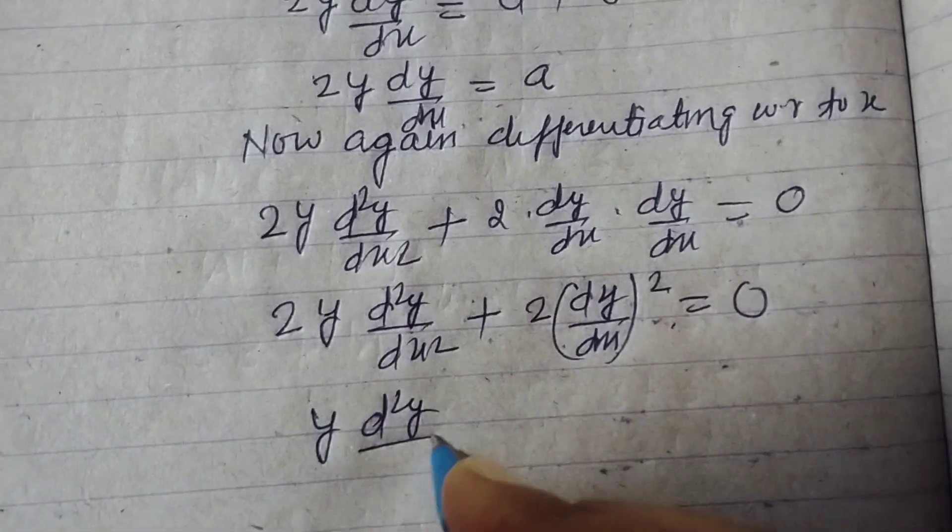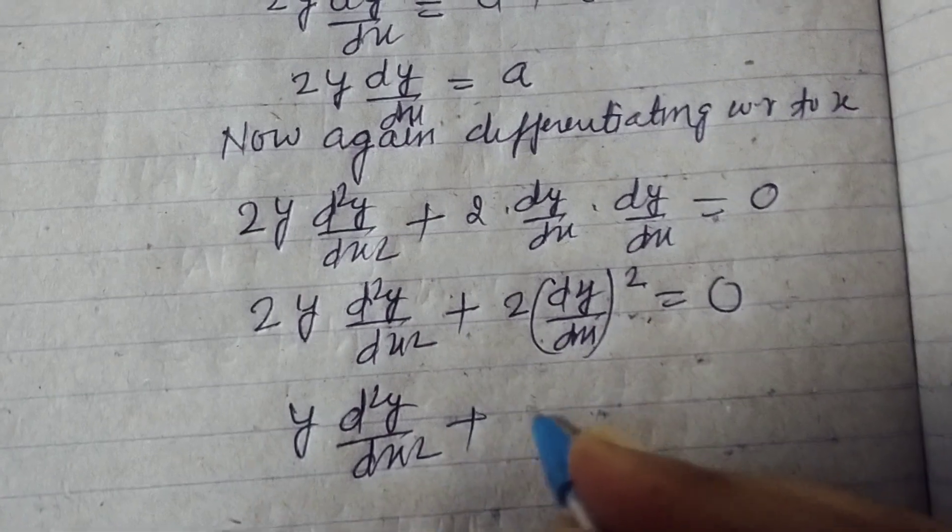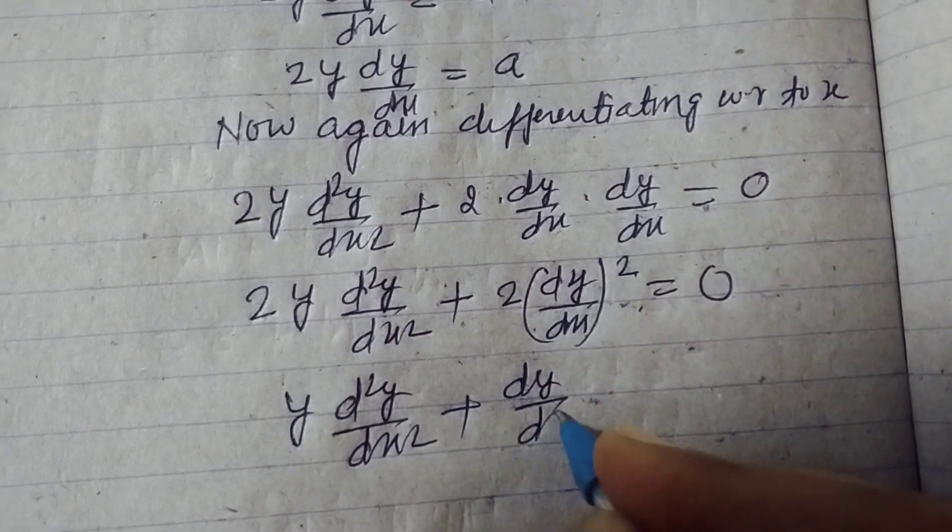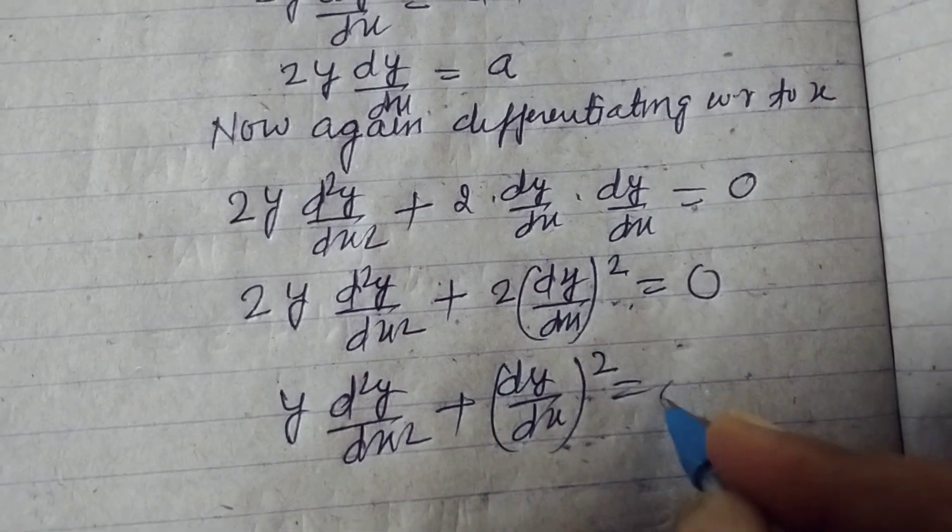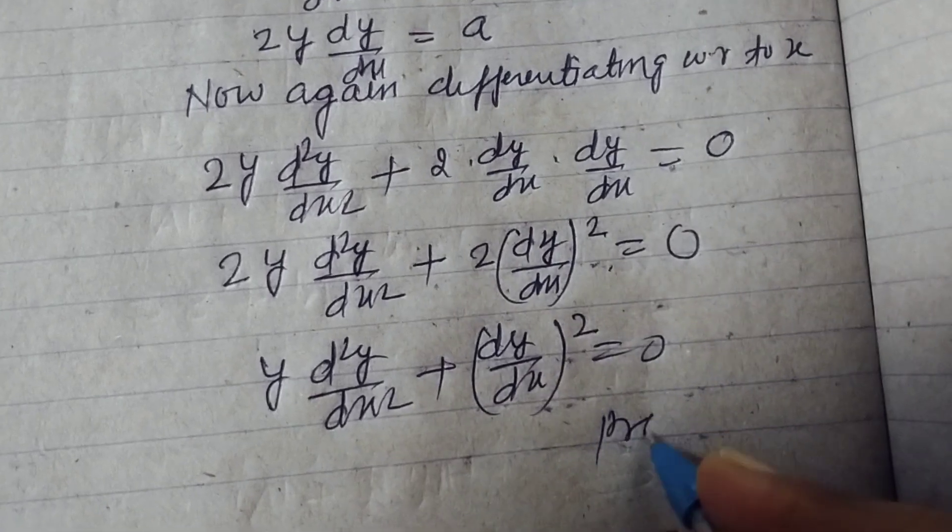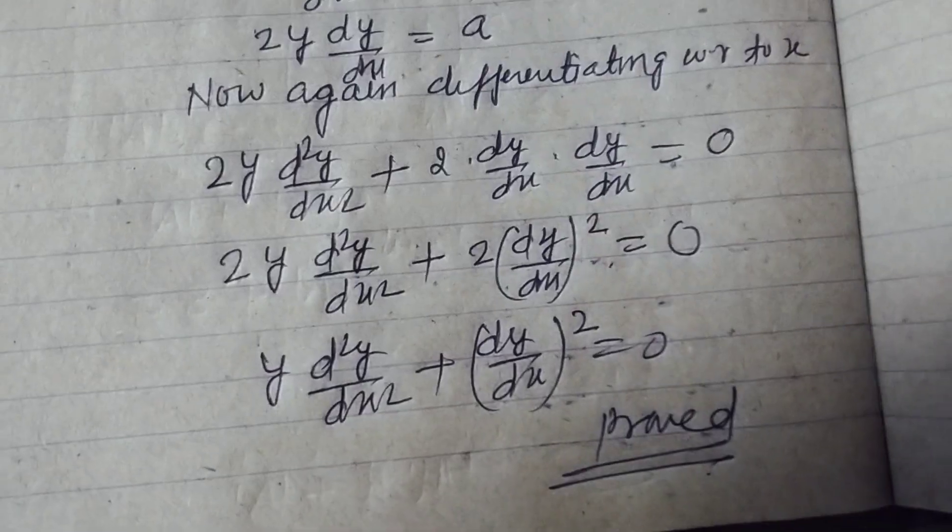So y d square y over dx square plus dy by dx whole square equals zero. And this is proved. Hence proved.